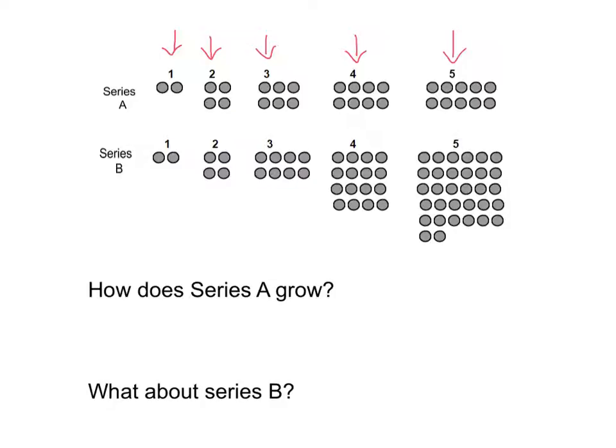As we look at series A and B, we can very quickly see that series A happens by adding two each time. Every time we add two, we increase the number of dots and we create the next cycle. So series A grows very straightforward.